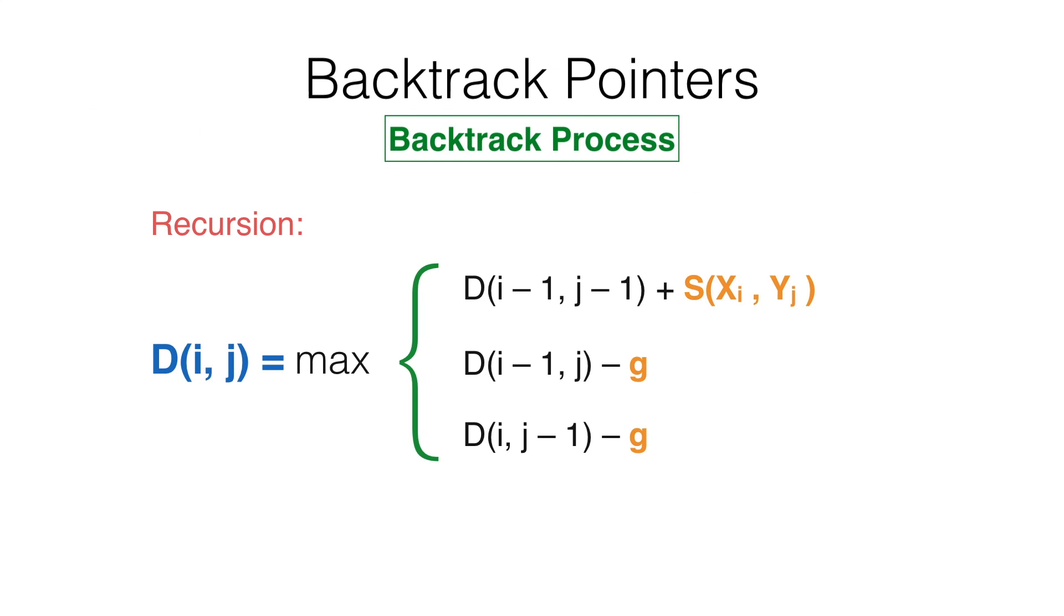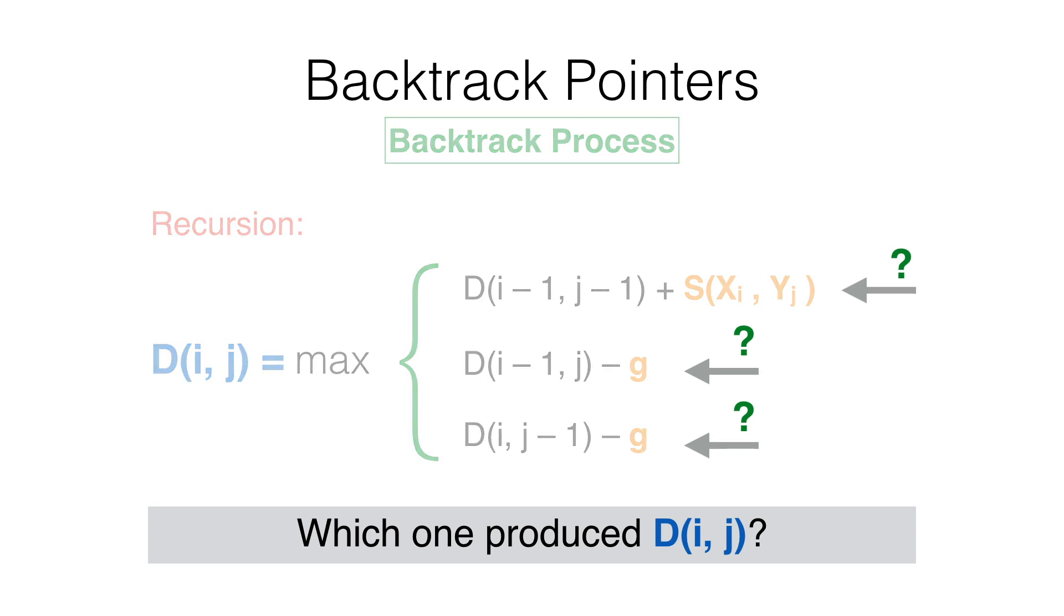D stores the scores, but it does not keep record of which of the three options produce the maximum. Such information, which is crucial to reconstruct the alignment, is stored in an auxiliary array referred to as the array of pointers. As its name indicates, this array stores pointers to the input of the recursive formula that achieves the maximum. In case that two or three inputs produce the same maximum, the method is either adopted to select one or keep track of multiple pointers.